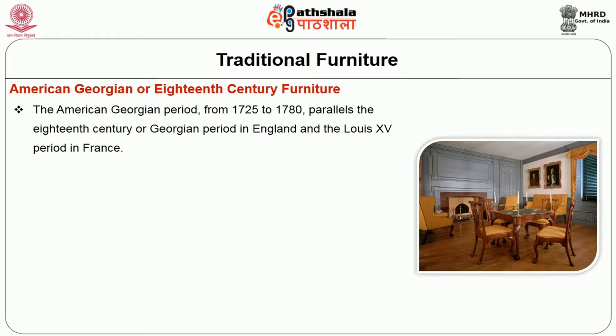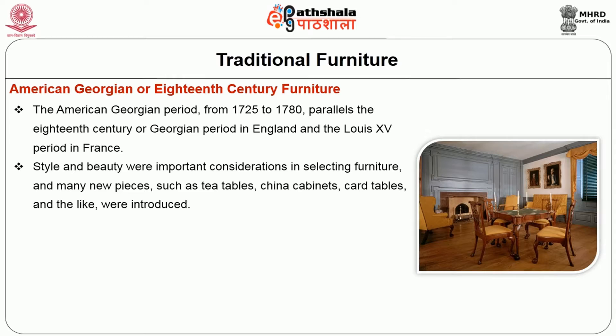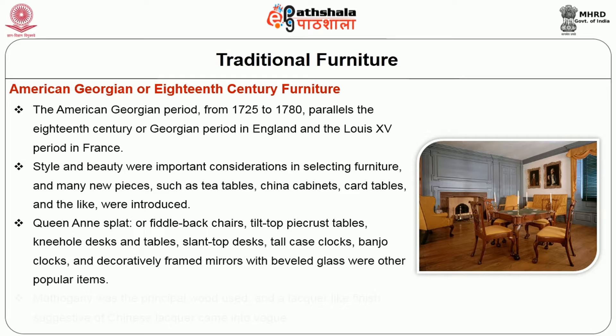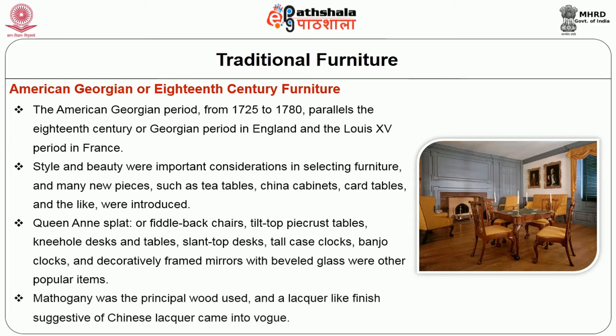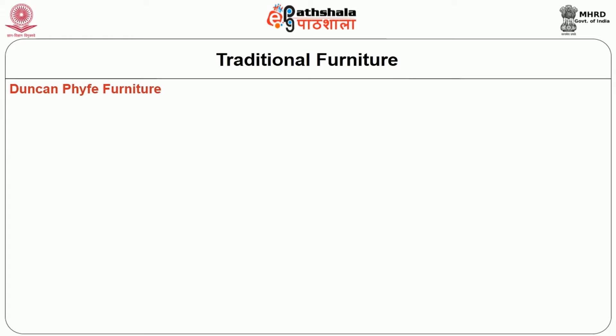American Georgian or 18th Century Furniture: The American Georgian period from 1725 to 1780 parallels the 18th century Georgian period in England and the Louis XV period in France. Style and beauty were important considerations in selecting furniture, and many new pieces such as tea tables, china cabinets, and card tables were introduced. Queen Anne and splat or fiddle back chairs, tilt top pie crust tables, kneehole desks, slant top desks, tall case clocks, banjo clocks, and decoratively framed mirrors with beveled glass were other popular items. Mahogany was the principal wood used, and a lacquer-like finish suggestive of Chinese lacquer came into use.